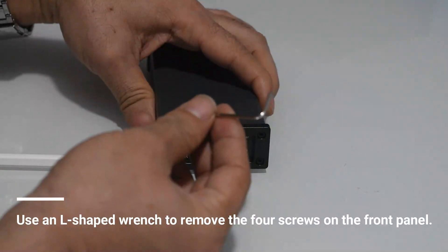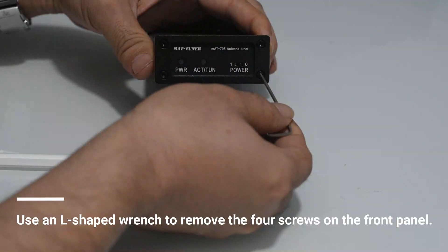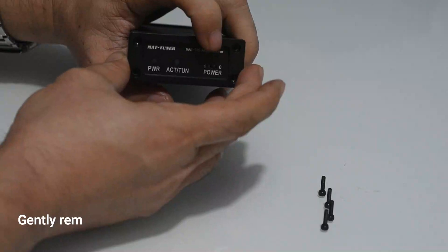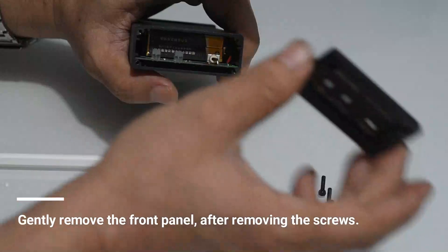Using the supplied allen key, remove the four screws from the front panel. Once removed, gently take the front panel away from the enclosure.